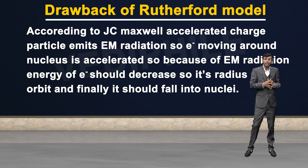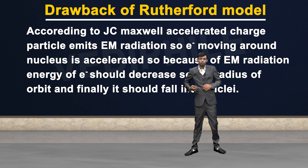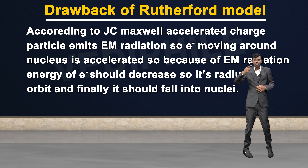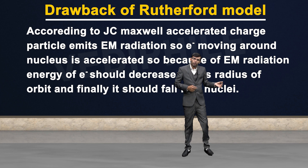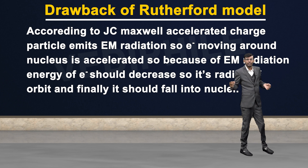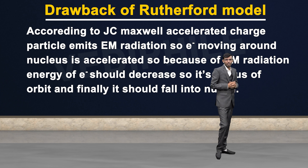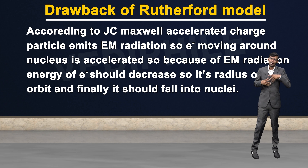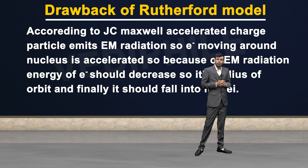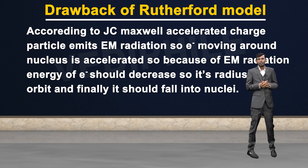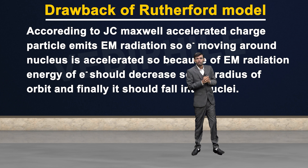Since the electron is in circular orbit motion, it will radiate electromagnetic waves according to James Clark Maxwell. If it radiates, its energy will decrease. As energy decreases, its orbit will keep getting smaller and finally it will fall into the nucleus. According to this reasoning, the universe should not exist at all — but the universe does exist, you are here and I am here.